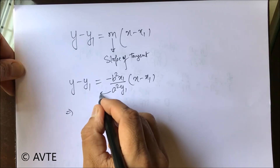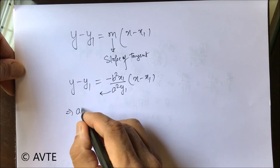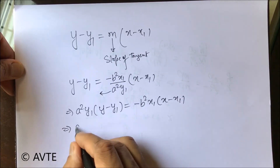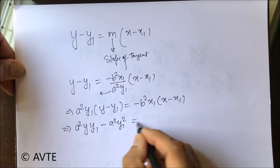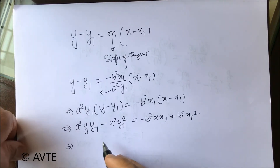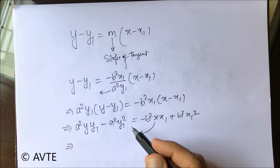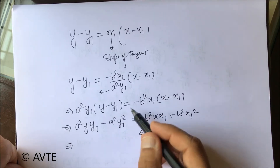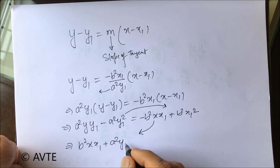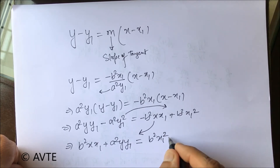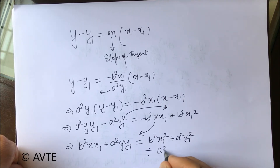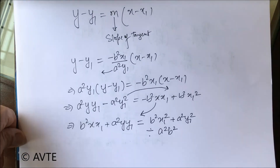Cross multiplying on the other side. Now dividing both sides by a squared b square, we get the simplified form.